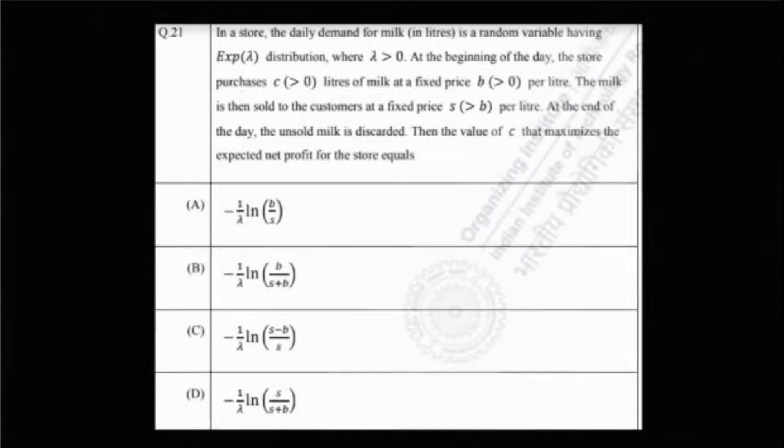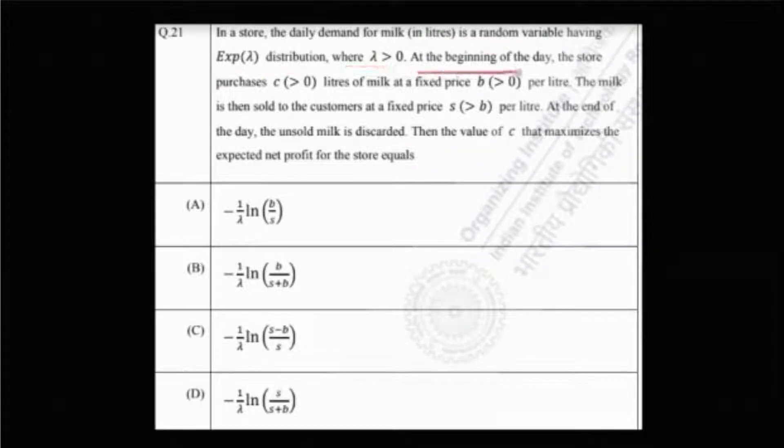Welcome to Chintha Statistics and Data Science. Today we are going to solve problem 21 from IIT JAM MS 2022. The problem says that in a store, the daily demand of milk in liters is a random variable having exponential lambda distribution, where lambda is positive.